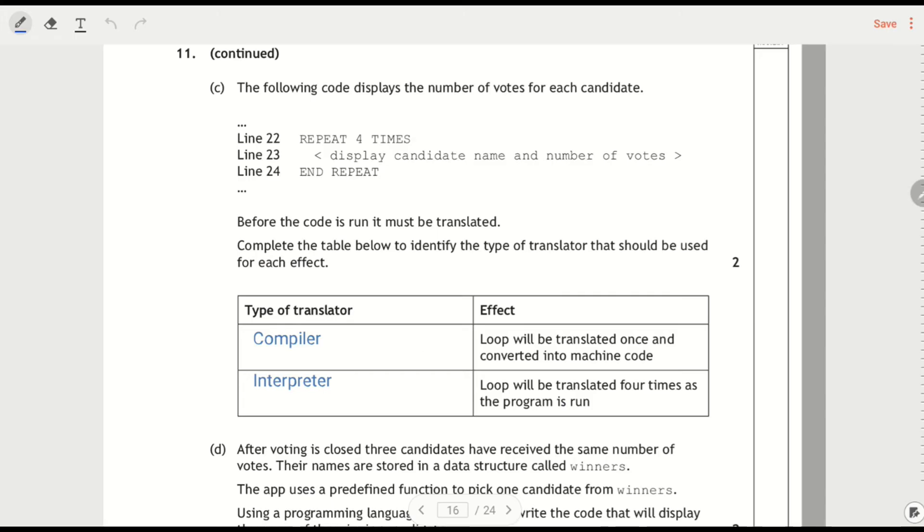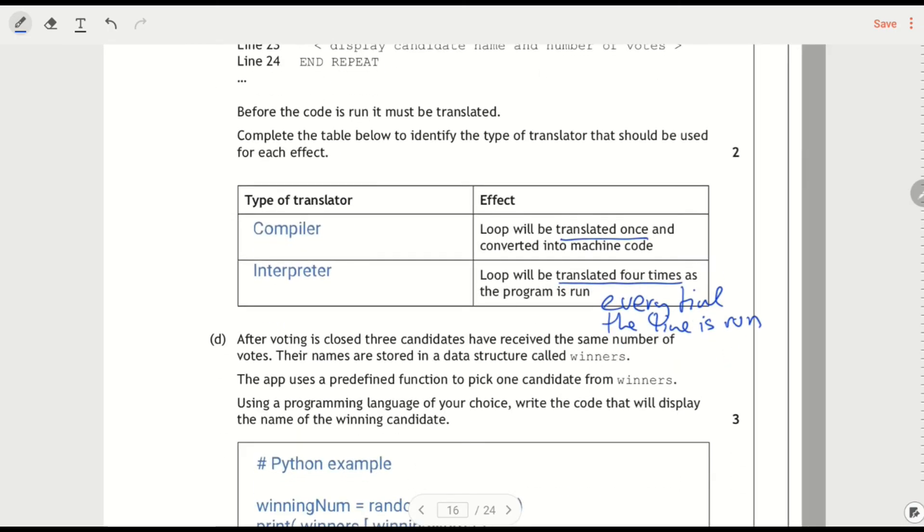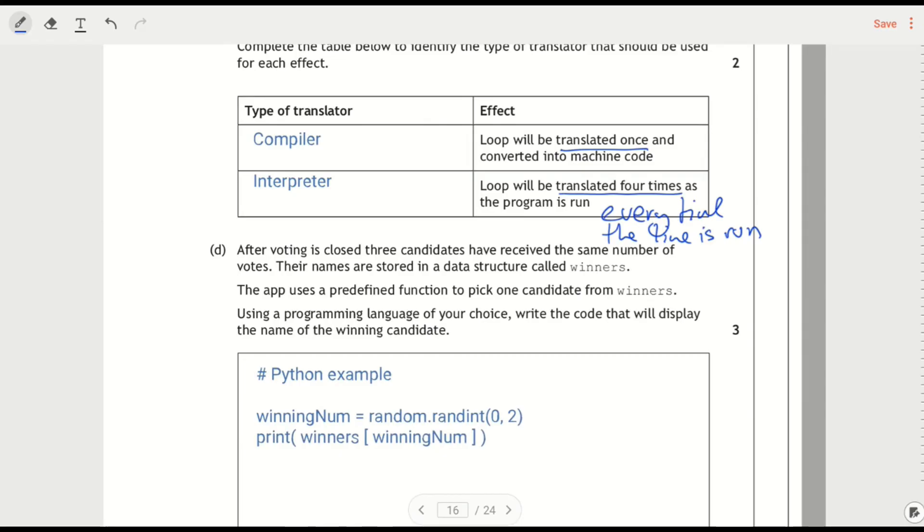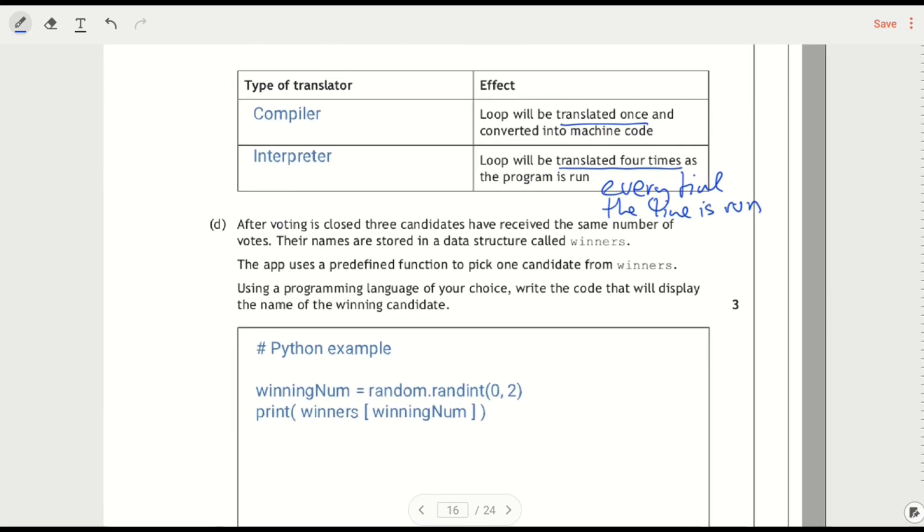So the compiler is going to be translated once, or the compiler is going to be used to translate the code once I should say, to convert it to machine code. The interpreter translated four times, every time the line is run, because an interpreter isn't just every time that the program runs, but every individual line is translated one at a time. So you're going to translate that line four times because it's in a loop.